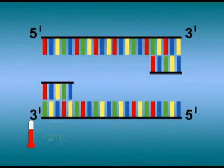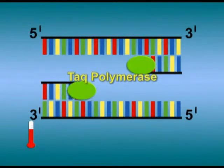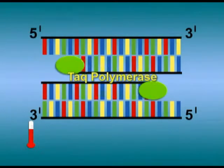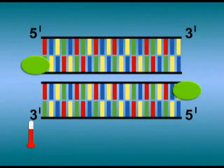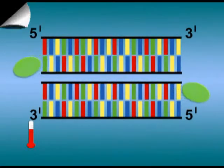The temperature increases again to 72 degrees Celsius, at which temperature Taq polymerase begins to manufacture the complementary strands of DNA using the nucleotides in the solution, and the extension begins.